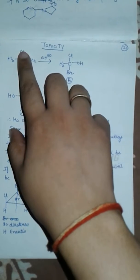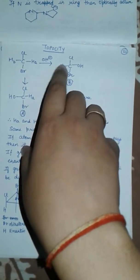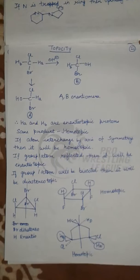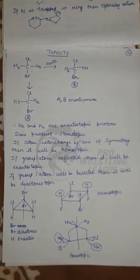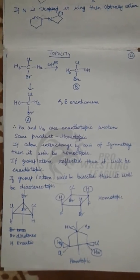Now I'll study toposity. In this compound, carbon is attached to chlorine, H_A, H_B, and bromine. When H_A is replaced by OH negative, it becomes compound B. When H_B is replaced by OH, the compound is A.